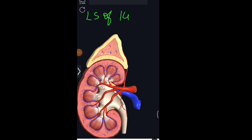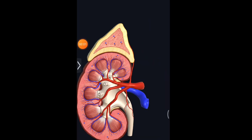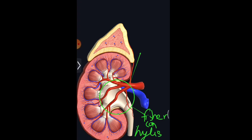Let us observe the longitudinal section of the kidney. The kidney shows two distinct regions: the dark-colored outer zone is called the cortex, and the pale inner zone is called the medulla. The inner side of each kidney has a fissure or hilus for entry of the renal artery, exit of the renal vein, and the ureter. The renal artery brings oxygenated blood loaded with waste products, and the renal vein carries deoxygenated blood.